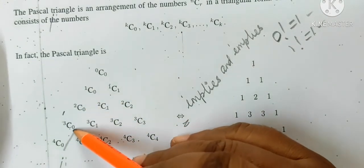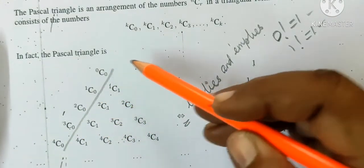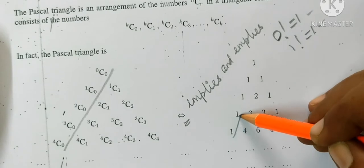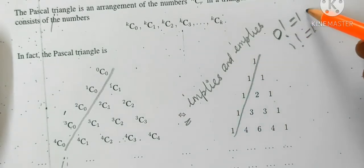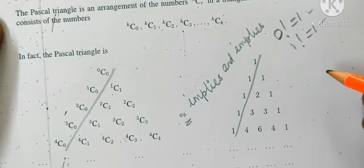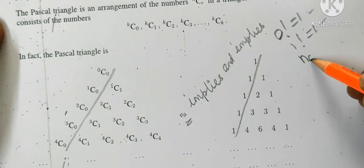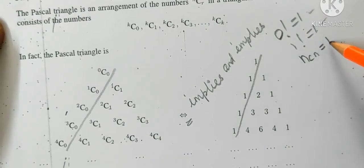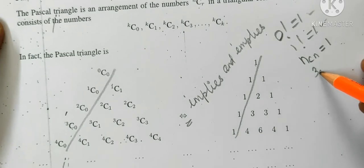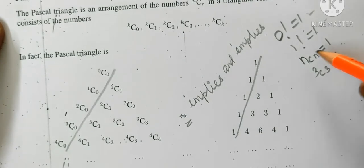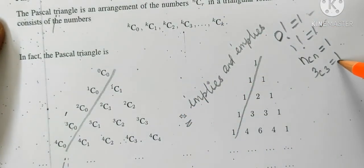For all nc0, the answer is 1. We have zero factorial. We have another result: ncn equal to one. For example, 3c3 equal to one.